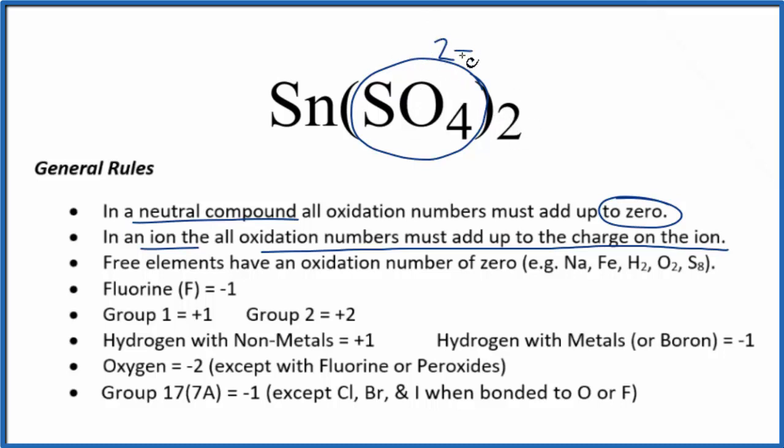Since we have two of these, 2 times the 2-, we have a minus 4 for all these oxidation numbers. The tin, in order to have this 0 here, has to be positive 4. So the oxidation number on the tin in tin(IV) sulfate is plus 4. That's why we call it tin(IV).